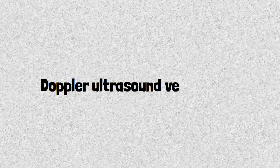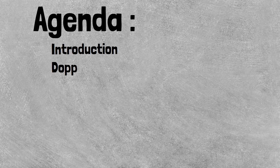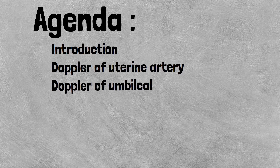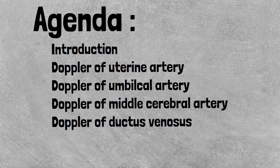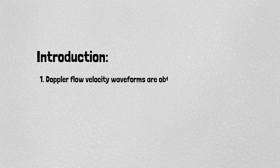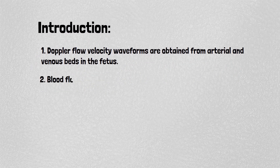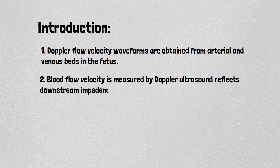Today we are going to look at Doppler ultrasound velocimetry. We will cover introduction to Doppler of the uterine artery, Doppler of the umbilical artery, Doppler of the middle cerebral artery, and Doppler of the ductus venosus. Doppler flow velocity waveforms are obtained from arterial and venous beds in the fetus. Blood flow velocity is measured by Doppler ultrasound, which reflects downstream impedance.